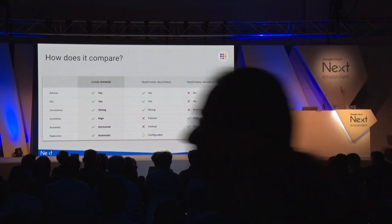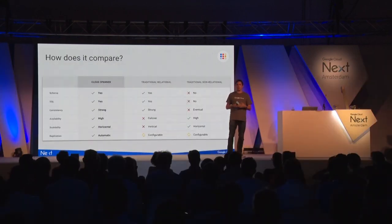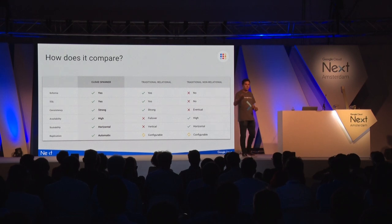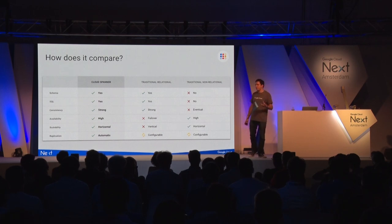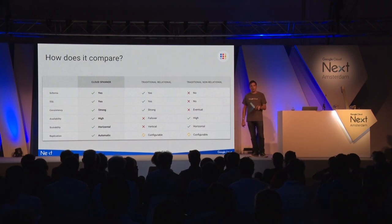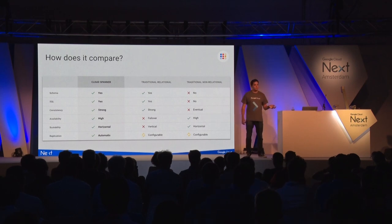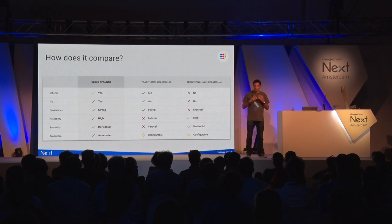You can also scale a relational database by adding read replicas to alleviate load on the master node, but then you have to deal with replication lag. If you need the most consistent view, you go back to the master - but then you're consuming resources set aside for writes. With Spanner, that situation just doesn't happen.